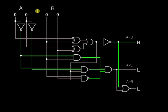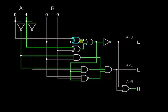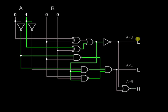Now I am changing the value: A is 1 and B is 0. In this condition, A is greater than B. A1 is low, B1 is low, so the XOR output is low. A2 is high, B2 is low, so the XOR output is high since one input is high. This high signal goes to the NOT gate, giving a low output — so A is not equal to B.